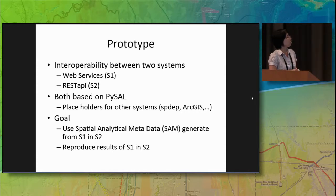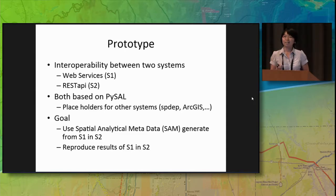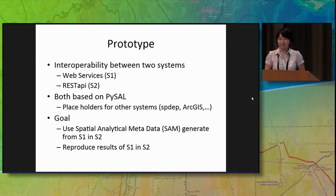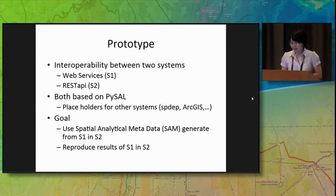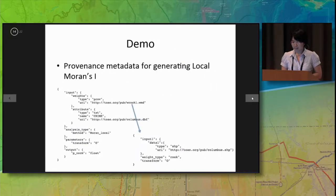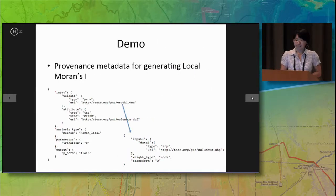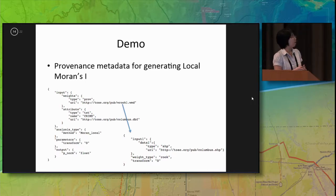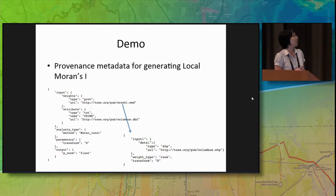The goal is to use the spatial analytical metadata generated from one system, S1, within S2, and to reproduce the result in S2 to cross-compare the accuracy. Here is a demo showing the provenance metadata for generating local statistics using LISA.